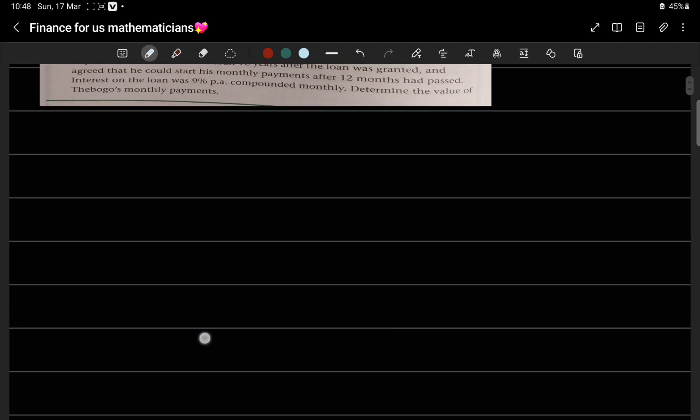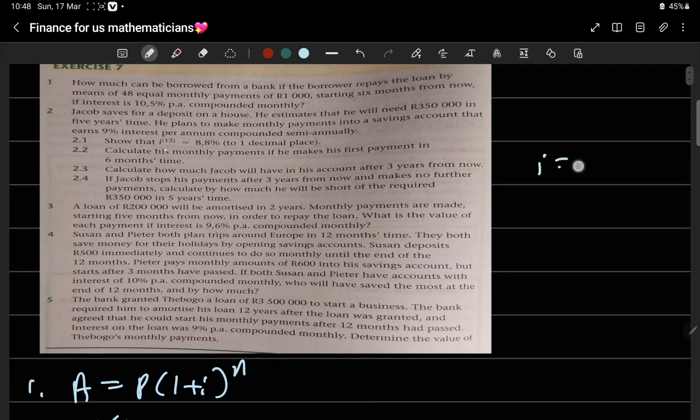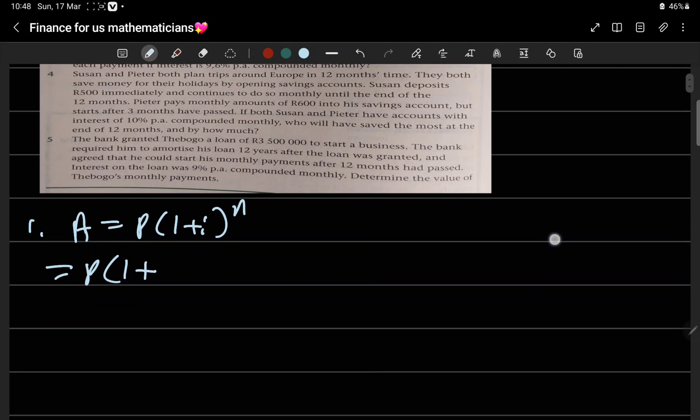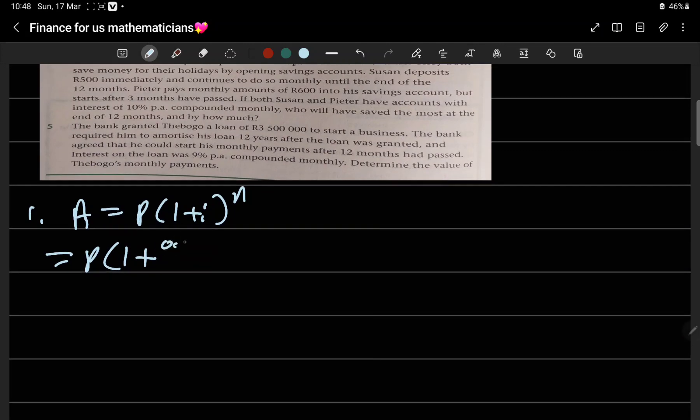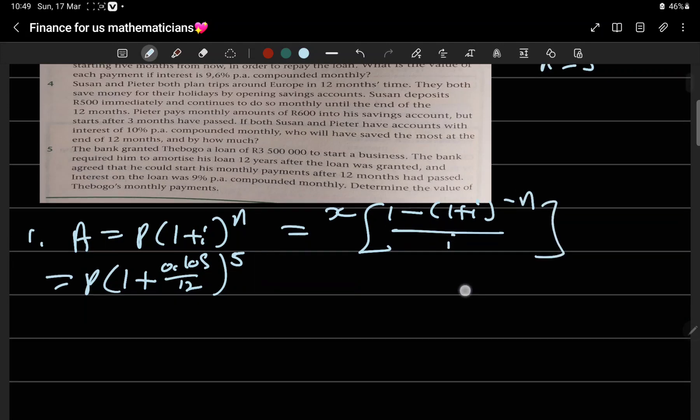Okay, firstly let's find the loan. We have P times (1 plus i)^n. The loan will gain interest at 10.5%, so this is 0.105 over 12, compounded monthly. Starting in six months means the loan stays in the account for five months before payments start, so we have (0.105/12)^5. Then this will be repaid, and the repayment formula is (1 minus (1 plus i)^(-n)) over i, which will be repaid by those monthly payments.